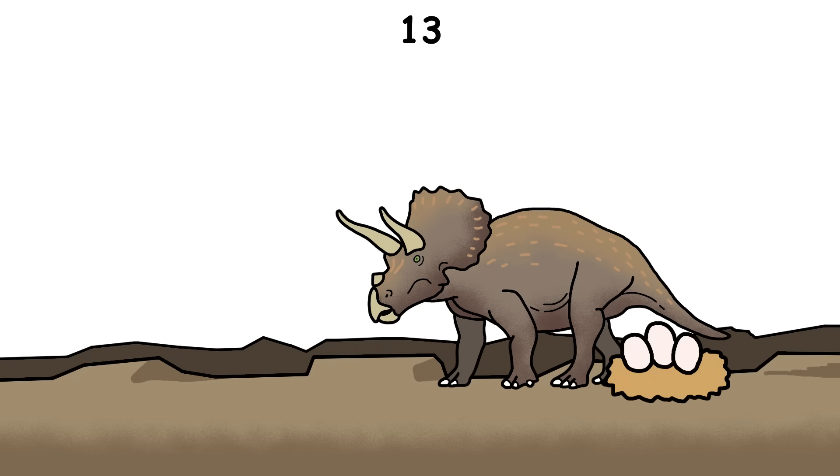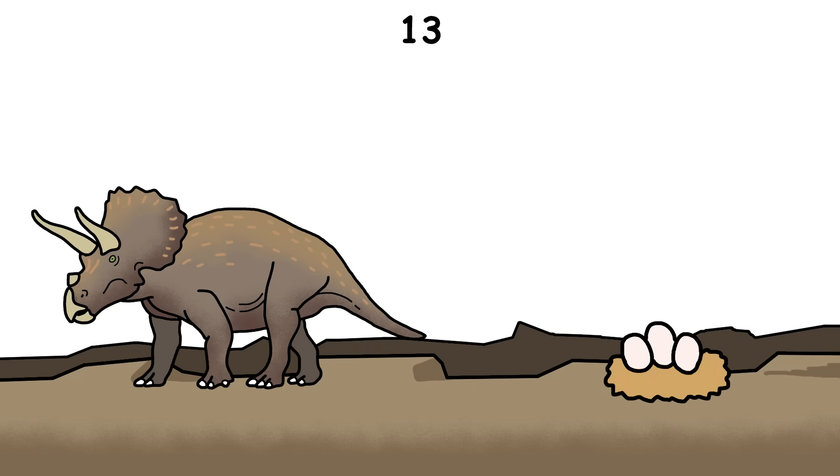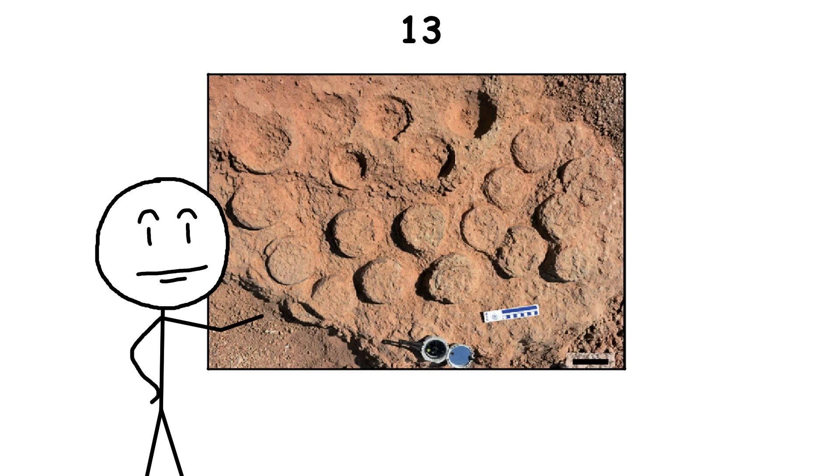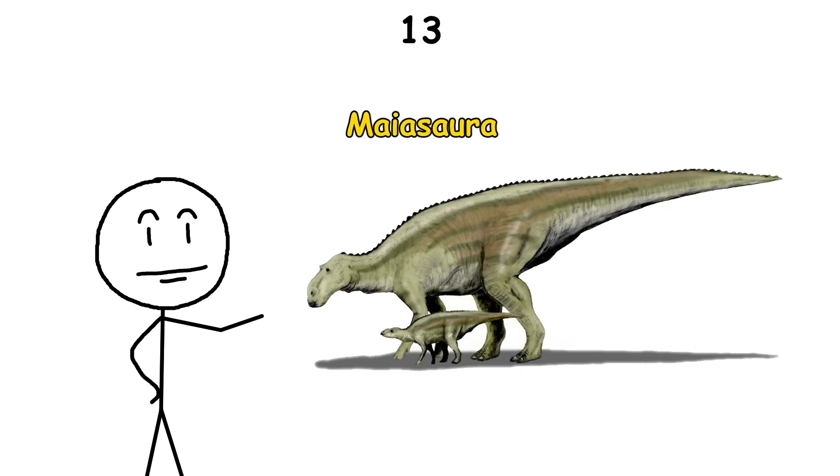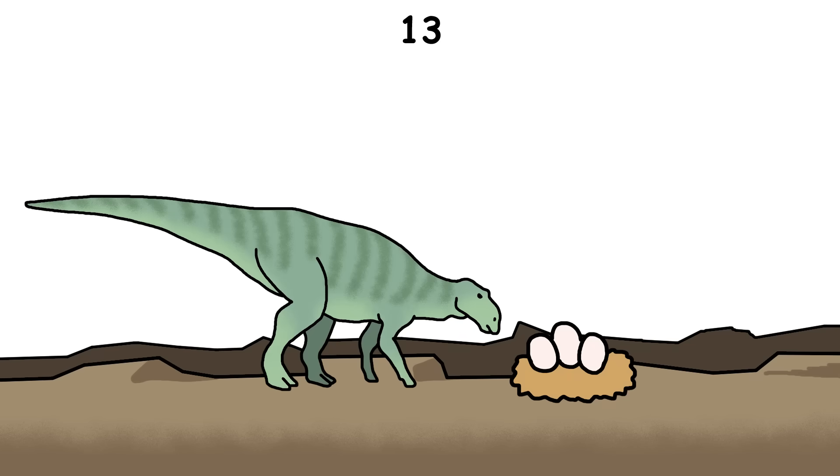The idea that dinosaurs were neglectful parents who just laid eggs and left is completely wrong. Scientists have found large nesting colonies, like those of the Maiasaura, whose name means good mother lizard, with evidence that parents cared for their kids.